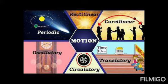First, we will talk about translatory motion. There are two types: rectilinear and curvilinear. Translatory motion is the motion in which all the particles of a body move through equal distance in a given time. If a body moves in a straight line, it is said to have rectilinear motion — like if you drive your car in a straight line, we call that rectilinear motion.